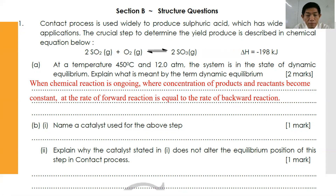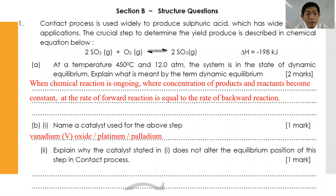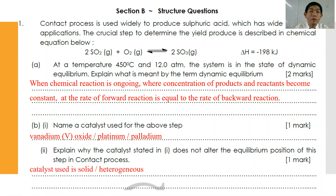Part B: Name a catalyst used for the above step. Because the question uses the word 'name,' you cannot use the formula — you have to write it as vanadium(V) oxide. We also accept platinum and palladium as answers. Part C: Explain why the catalyst does not alter the equilibrium position. If the catalyst were a gas, it might influence the position of equilibrium. However, vanadium oxide, platinum, and palladium are all solid catalysts — heterogeneous catalysts — so they will not influence the position of equilibrium.